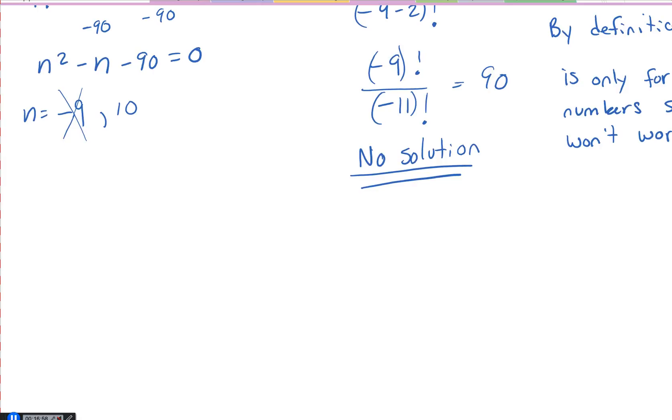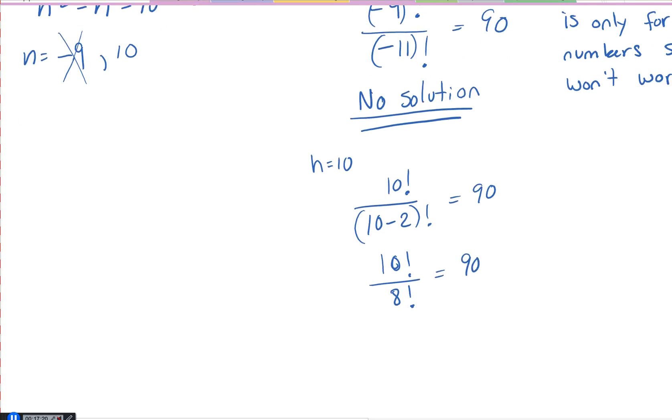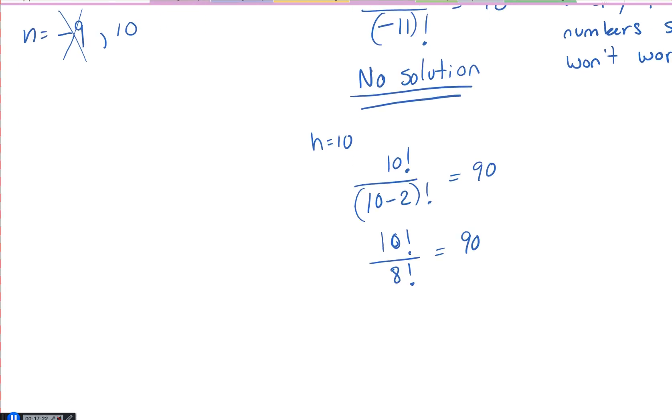Is ten a solution? Let's check. So for n equals ten, we would have ten factorial divided by ten minus two all factorial equals ninety. Ten factorial divided by eight factorial. You can put that in your calculator, and you'll get that yes. Ninety is equal to ninety. And that works.